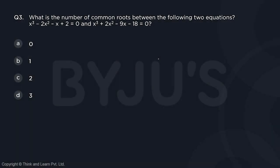Question number three: What is the number of common roots between the following two equations? So we have two cubics and we need to find out the number of common roots. Well, if you look at the first cubic, the sum of the coefficients are 1 minus 2 minus 1 and 2, so this sum of the coefficients is 0. Whenever the sum of the coefficients is 0, we definitely know that 1 is one of the roots.